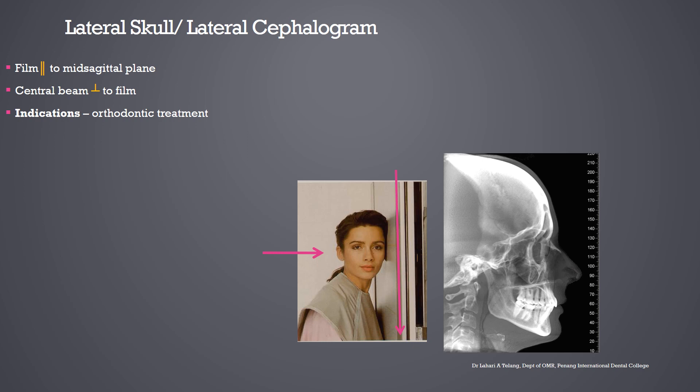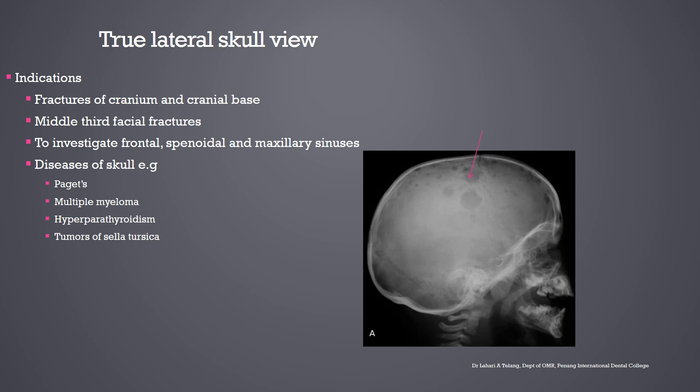This is a very good view for assessing the profile of the patient, as both soft tissue and hard tissue structures are of importance in orthodontic treatment planning. The true lateral skull view shows the entire skull and is taken similarly. It is indicated for fractures of the cranium and cranial base, middle third facial fractures, and to investigate frontal, sphenoidal, and maxillary sinuses — though these are superimposed over each other. It is also used to see diseases of the skull such as Paget's disease, multiple myeloma, hyperparathyroidism, and tumours of the sella turcica. The arrows here are pointing out punched-out radiolucencies in the skull, which are more likely due to multiple myeloma.